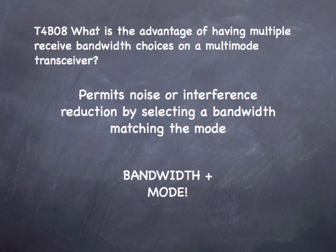This question is: what is the advantage of having multiple received bandwidth choices on a multimode transceiver? And the correct answer is: permits noise or interference reduction by selecting a bandwidth matching the mode. Out of the possible answers, this is the only choice that actually has bandwidth in it. The question has bandwidth and the answer has bandwidth in it, and both of them also have mode in it — multimode and matching the mode. So I think: bandwidth and mode.